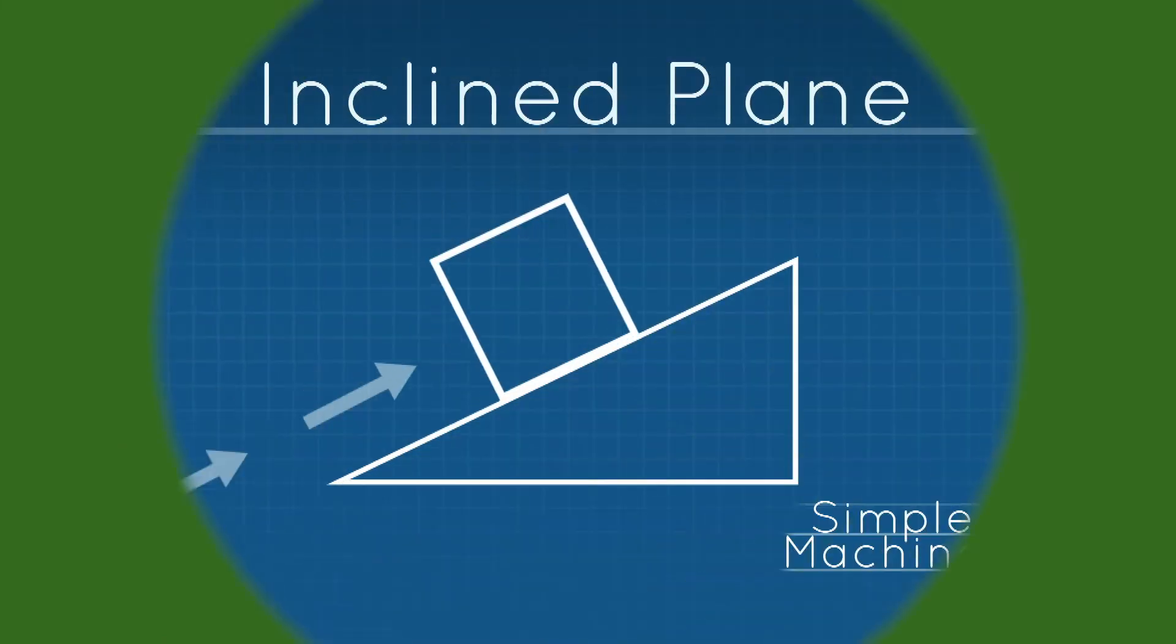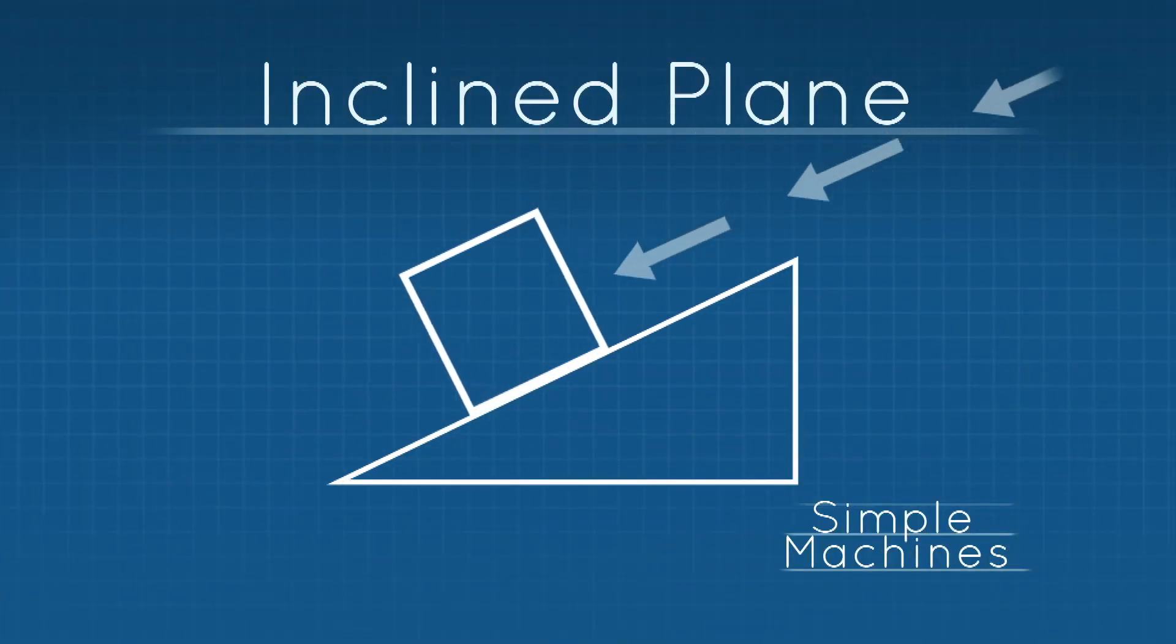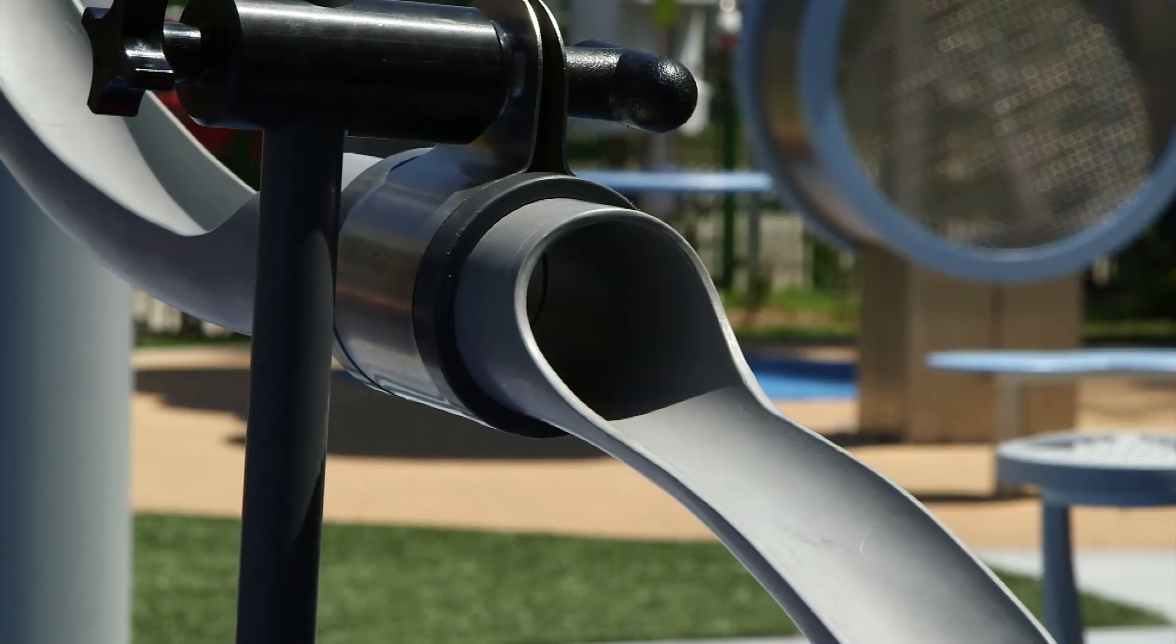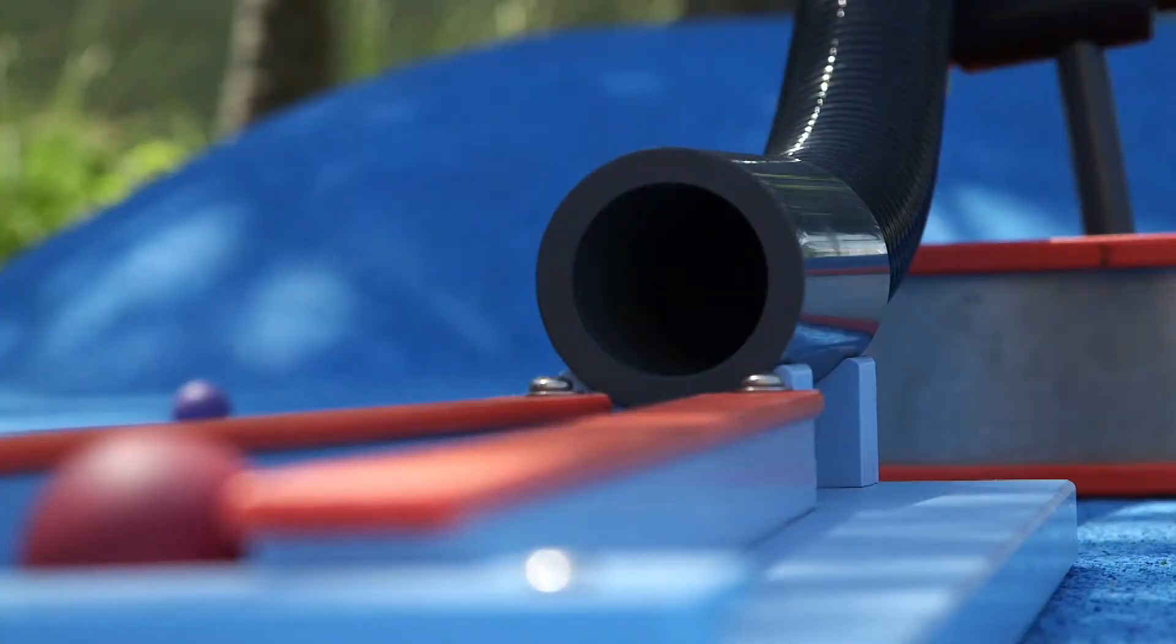Inclined plane. An inclined plane is also called a ramp. It's a simple machine. It has no moving parts. It makes it easier for us to move objects to a higher or lower surface.